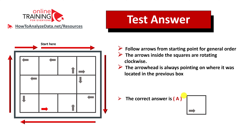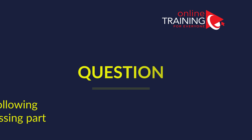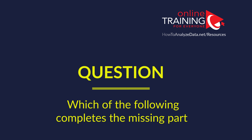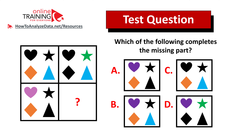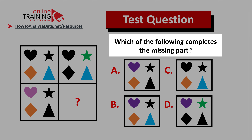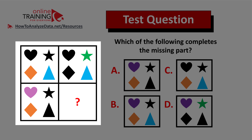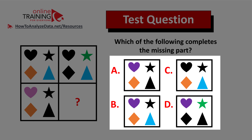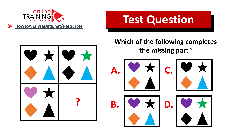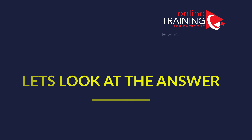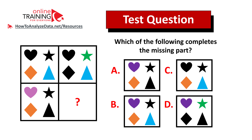In case you need more questions or practice problems, please check out my ebook in the description section. Here's another tricky question testing reasoning, analytical, and visualization skills: which of the following completes the missing part? You're presented with a two by two box where one square is missing, and four choices — A, B, C, and D. Pause the video and give yourself 10 to 20 seconds.